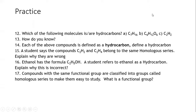Ethanol has the formula C2H5OH. A student refers to ethanol as a hydrocarbon — explain why this is incorrect. This is incorrect because ethanol has an oxygen atom in it, so it cannot be considered a hydrocarbon. The last question: what is a functional group? A functional group is an atom or a group of atoms which give a molecule its characteristic properties and reactions.